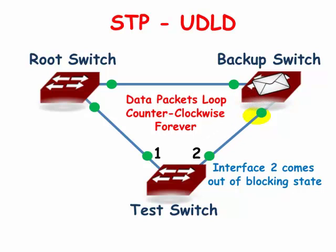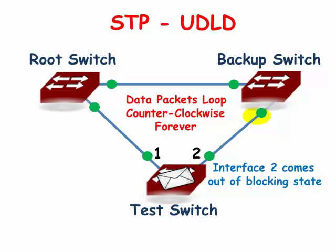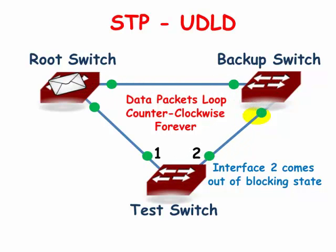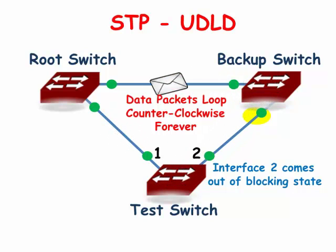When a data packet is flooded out of all of the ports, that data packet will go counterclockwise through the network until the interface is disconnected or the switch is powered down.